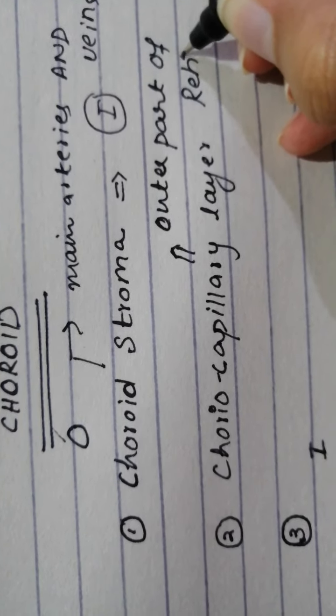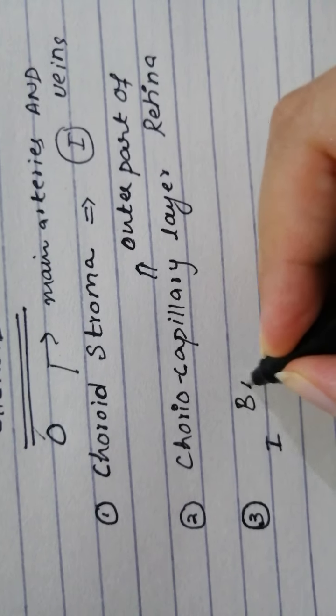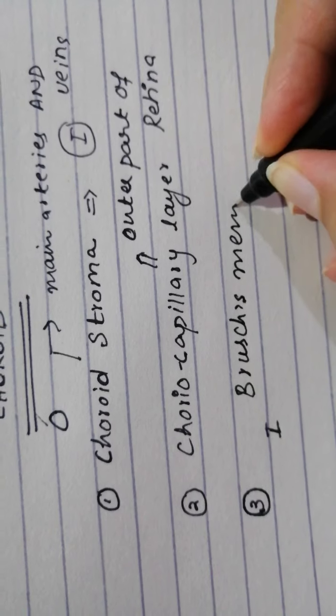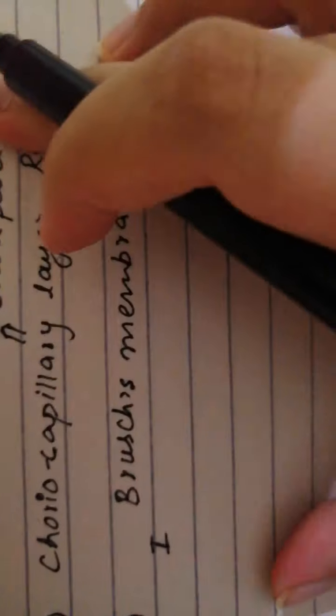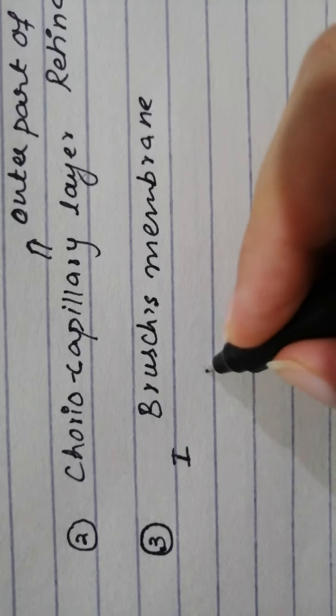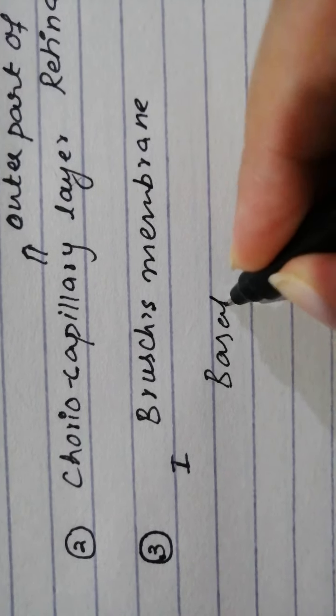And after this we have the Bruch's membrane. Now the Bruch's membrane is multi-layered from outside to inside. Let us begin. So on one side we have the endothelium. So first of all there is the basal lamina of the endothelium of the chorocapillary.